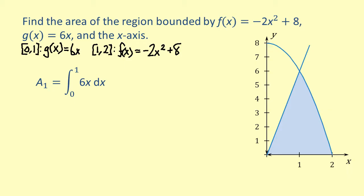The integral of 6x dx from 0 to 1 is 3x squared from 0 to 1. Evaluating, we get 3 times 1 squared. Substituting 0 will just give us 0. Simplifying, we get 3. So the area of the region from 0 to 1 is 3.